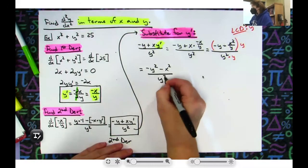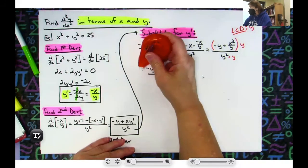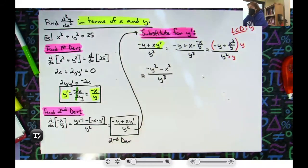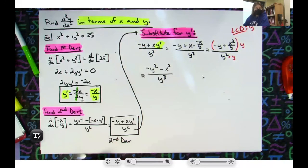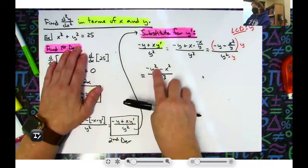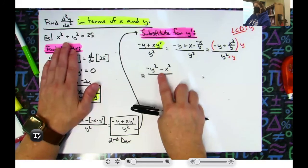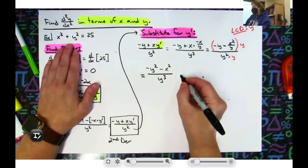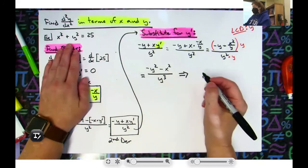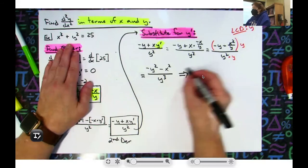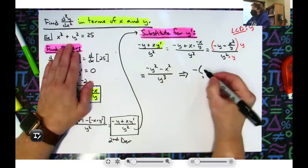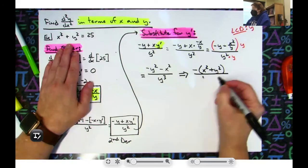Now I have a second derivative that is just in terms of x and y. However, they like for you to go just a little bit further — substitute from the original equation. Look at the numerator: negative y squared minus x squared. And look at the original: x squared plus y squared. If I factor out a negative and rearrange the terms, I get negative times x squared plus y squared, all over y cubed.